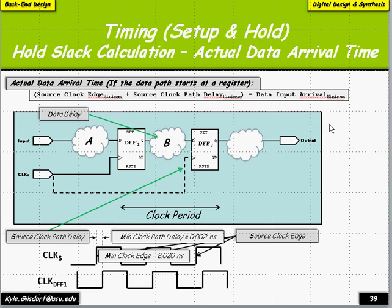For a register-to-register scenario, we consider the data arrival time by looking at clock paths. Whenever the clock arrives, the data has to arrive at the latching point. We need to account for when the clock enters the design and when it actually arrives at the flip-flop. So the data arrival time is: source clock edge plus source clock path delay.